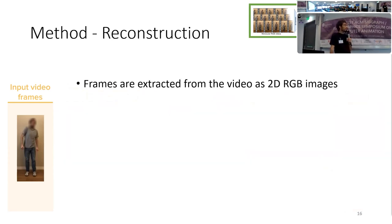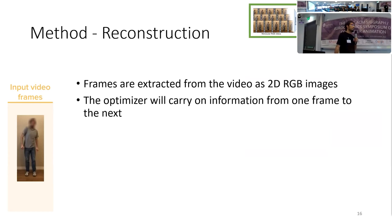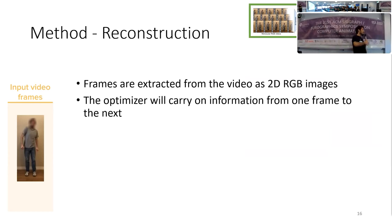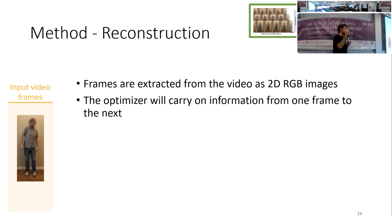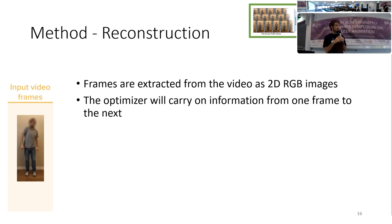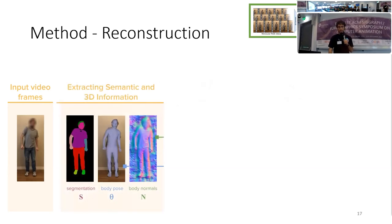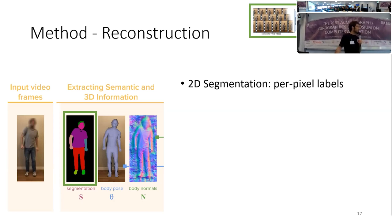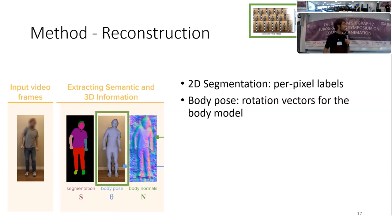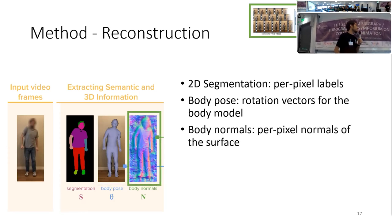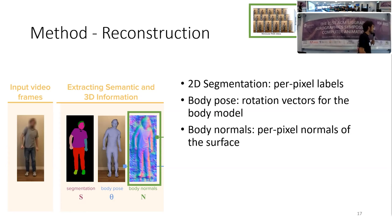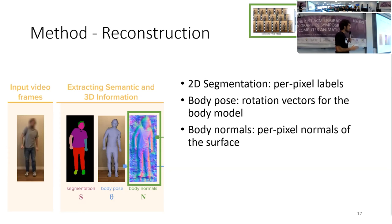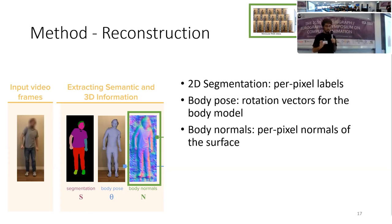We start from the video frames, and the optimizer carries information from one frame to the next, so there is no global temporal coherence but we maintain coherence between subsequent frames. We use state-of-the-art models to extract information such as segmentation — so we know which pixels contain the garment — body pose, so we know the human's pose, and surface normals. The surface normals are 2D information: an image with the normal vector of the surface, not a mesh.